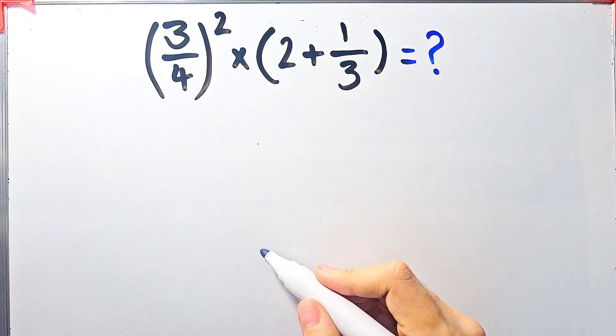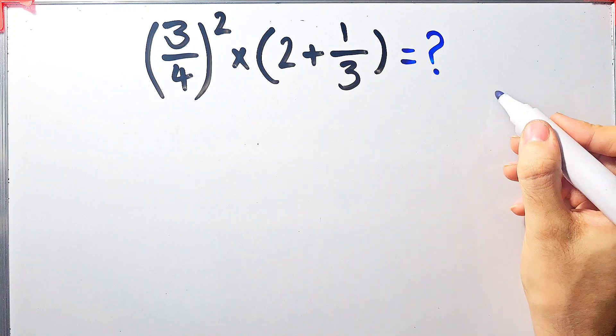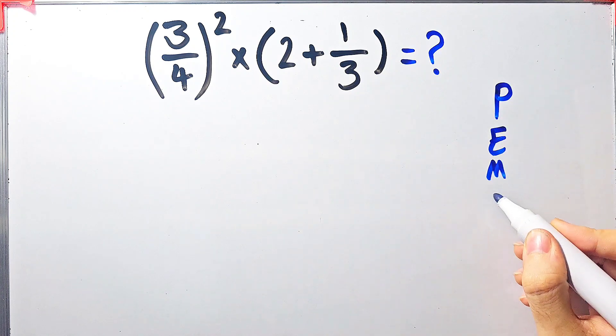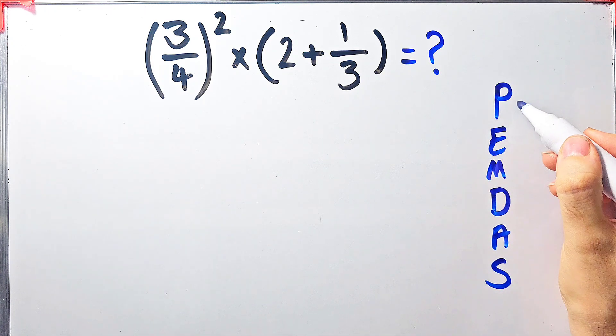In this question we have exponent, multiplication, parentheses, and addition. To solve this question we need to follow the order of operations, which is PEMDAS. PEMDAS shows the priority of the mathematical operations. In this rule, P stands for parentheses, E stands for exponent,